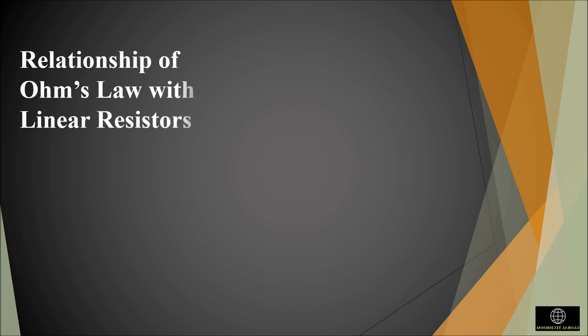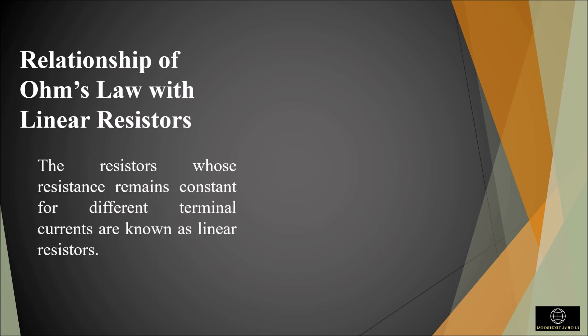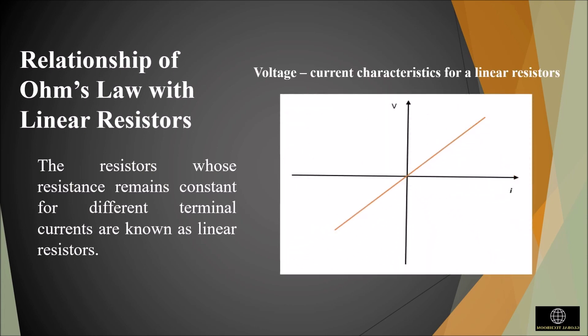Now let us discuss the relationship of Ohm's law with linear and nonlinear resistors. Consider the case of a linear resistor. Here R will be constant in the equation V is equal to I times R. The resistors whose resistance value remains constant for different terminal currents are known as linear resistors. A graph of voltage versus current is shown here, in which the line passes through the origin with the slope of R. The only graph possible for which the ratio of V to I is constant for all I is a straight line.